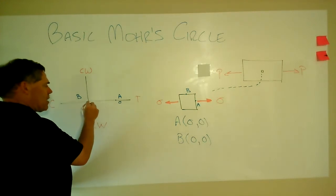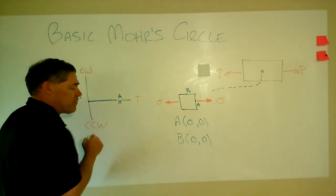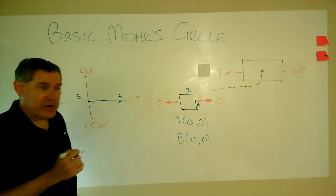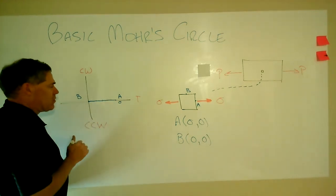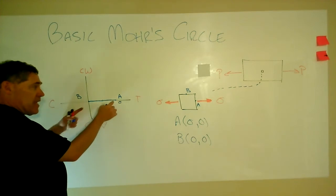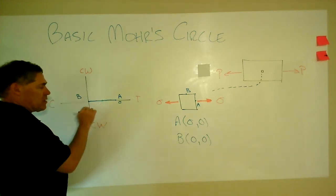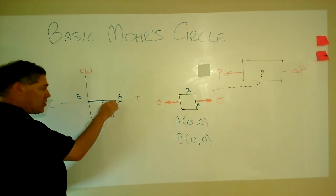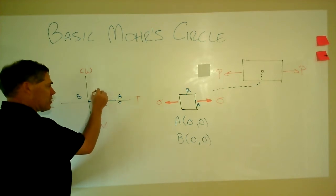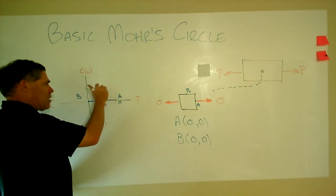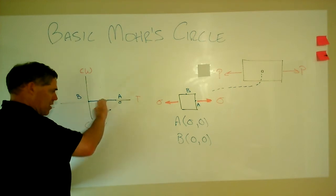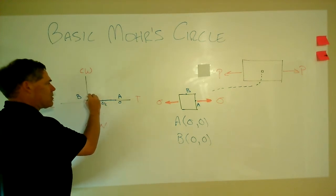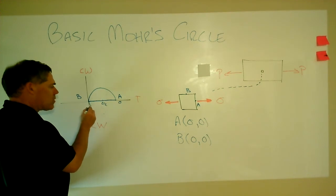And then A is out here at sigma equals P over A and zero. And again, that value is, in this case, just sigma equals P over A. Now, the straight line that goes between A and B is your diameter for your circle. And of course, like any diameter, the midpoint of it is going to be your radius or your origin. It'll give you the radius, and it also locates the origin of your circle.